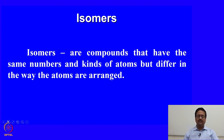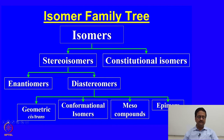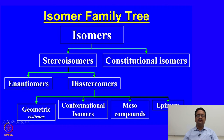We all know that isomers are compounds that have the same numbers and kinds of atoms but differ in the way the atoms are arranged. Isomers are specifically divided into two parts: stereoisomers and constitutional isomers. Stereoisomers are further subdivided into two parts — enantiomers and diastereomers — and diastereomers are again classified into four sections: geometric isomers or cis and trans isomers, conformational isomers, meso compounds, and epimers. We will slowly learn about all these different classifications of isomers through these lectures.